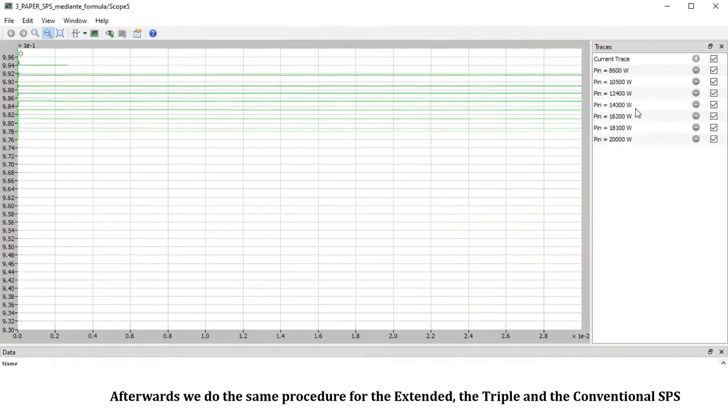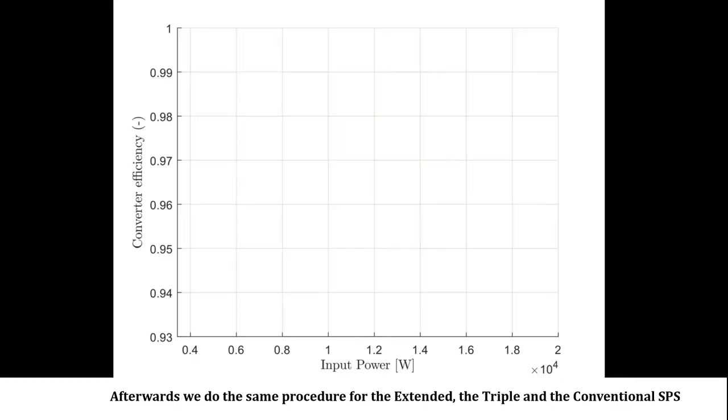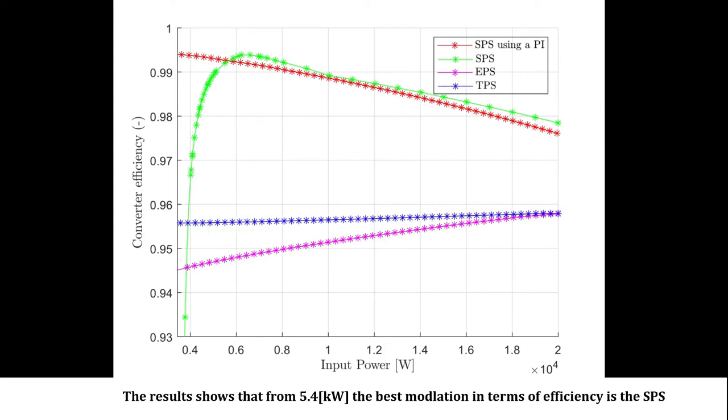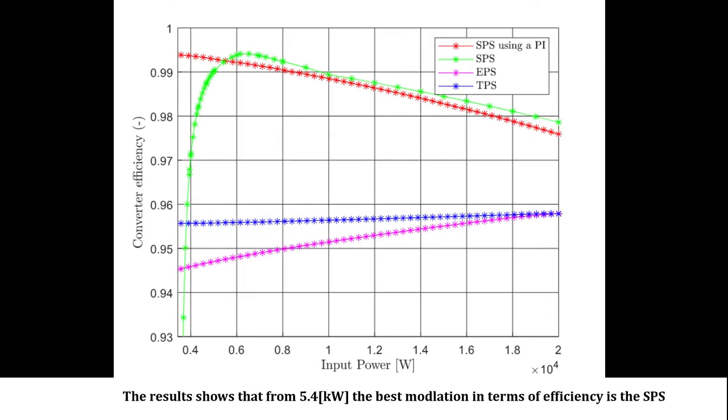Afterward, we do the same procedure for the extended, the triple, and the conventional single phase shift that the simulator PLECS uses with a proportional integral controller. The results showed that from 5.4 kW, the best modulation in terms of efficiency is the single phase shift, which showed a maximum value of 99.41% at 6.5 kW.